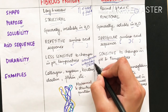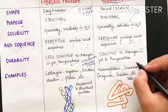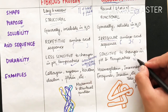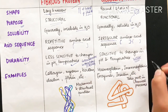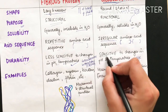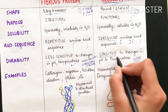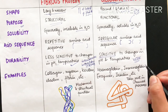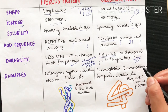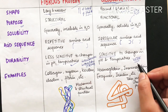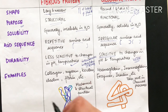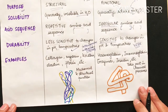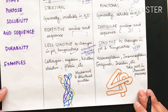Globular proteins have weaker intermolecular interactions, and therefore they are very sensitive to changes in pH and temperature. Now for examples: in fibrous proteins we have collagen, myosin, keratin, elastin, and fibrin — these are usually structural and mechanical functional proteins.